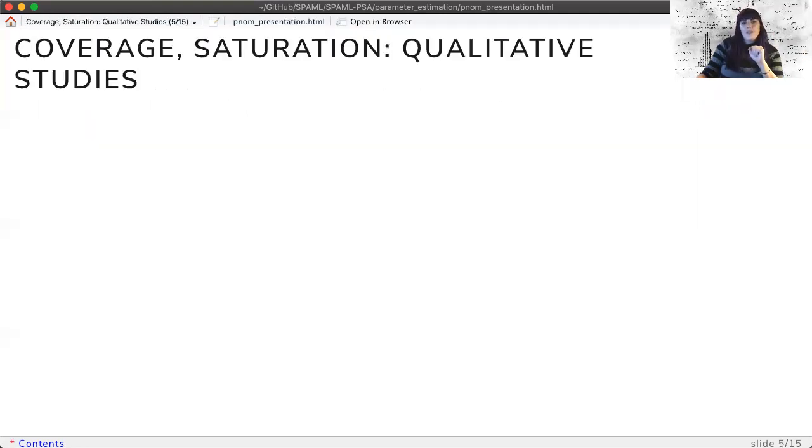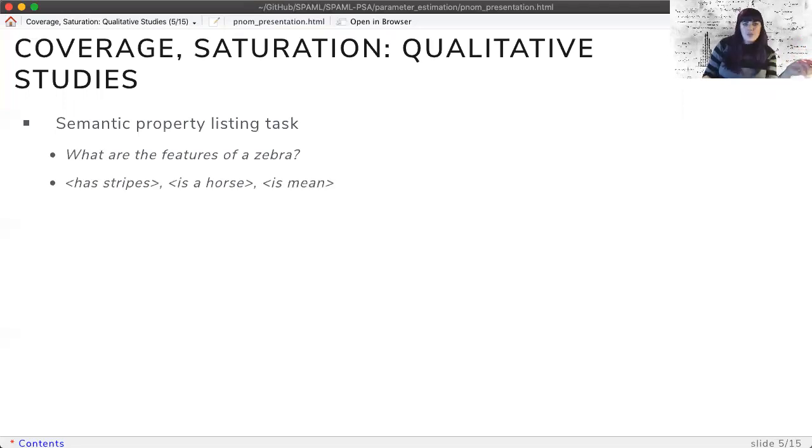First, power in qualitative studies is often called coverage or saturation, and this term denotes adequate sampling and that further sampling is unnecessary. In the semantic property listing task, you might ask a participant, what is a zebra? And they would list options like has stripes, is a horse, and is mean. Over many participants, this qualitative data is summed for feature frequency.